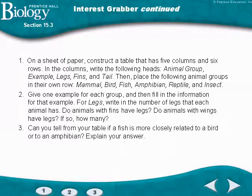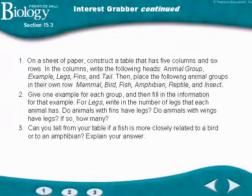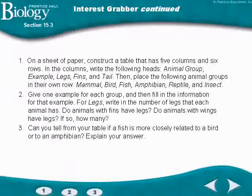Looking at mammals, birds, fish, amphibians, reptiles, and insects — if you look at whether they have legs, fins, or wings — you can see how related they are. It's really easy to see that a fish is very closely related to an amphibian as opposed to being related to a bird. From this you can see these relationships.